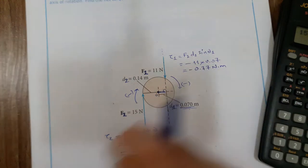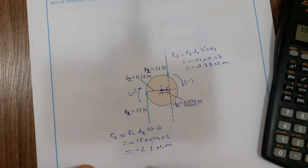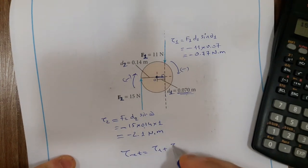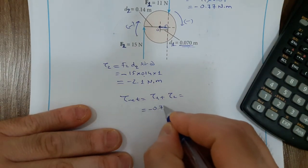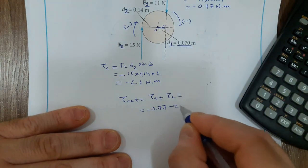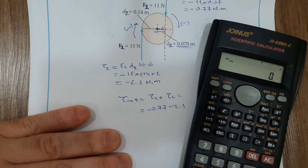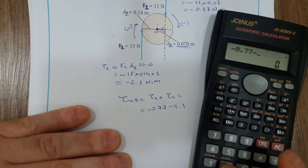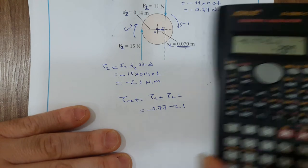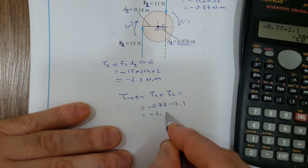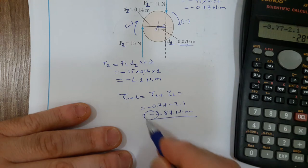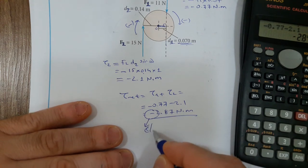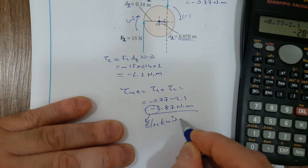Now calculate the net torque: torque 1 + torque 2 = negative 0.77 + negative 2.1 = negative 2.87 Newton·meter. Because it's negative, this ball rotates clockwise.